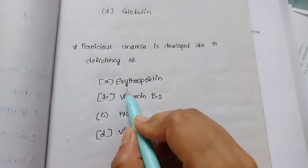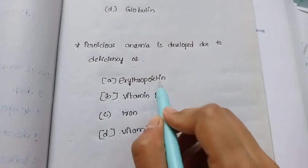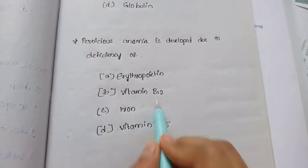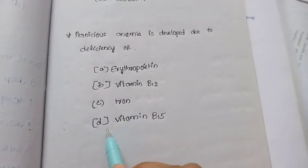Option A is erythropoietin. Option B, vitamin B12. Option C, iron. Option D, vitamin B15.